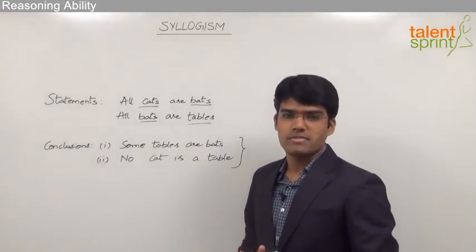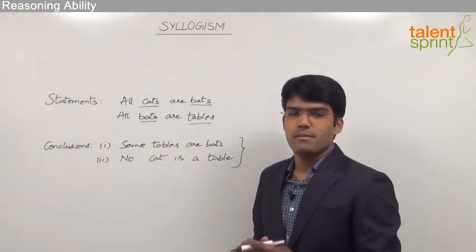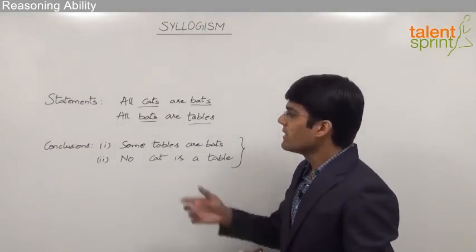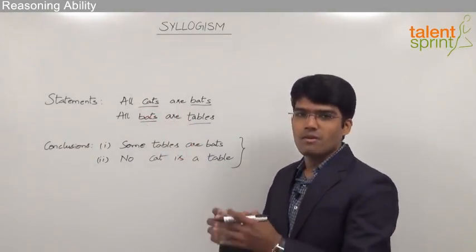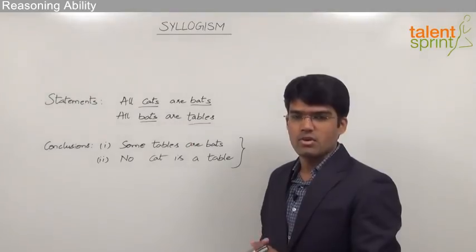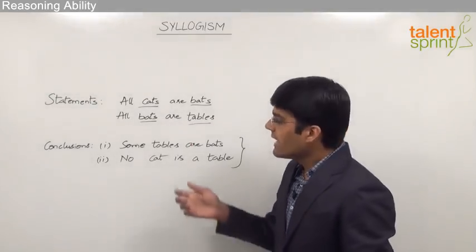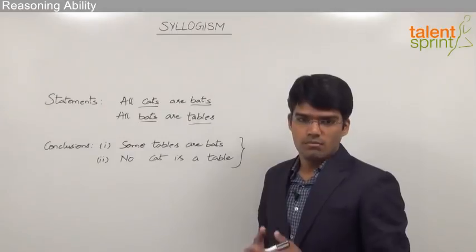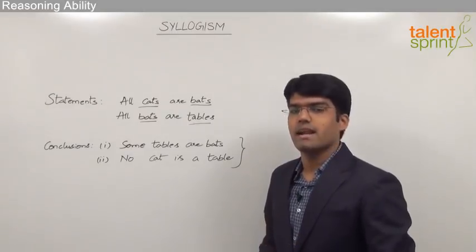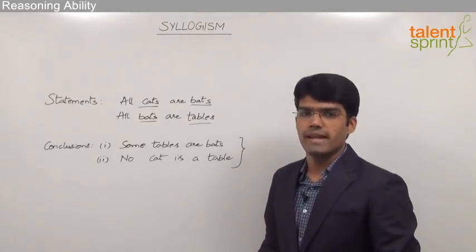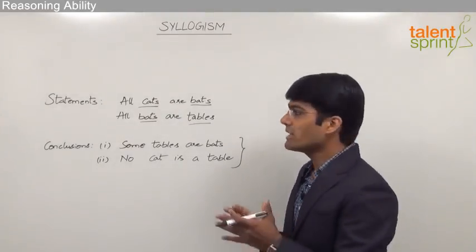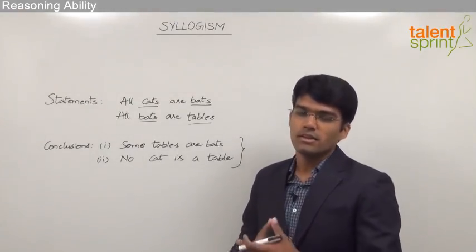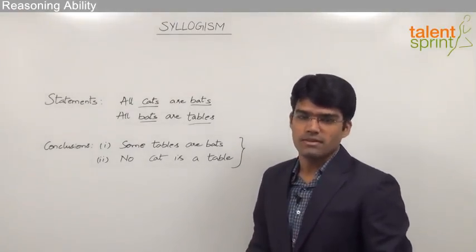To solve questions from syllogisms, the best method is to use Venn diagrams, where we draw the statements in terms of Venn diagrams — also known as Euler's circles — and then check which of the conclusions are true. But before we understand how to draw Venn diagrams, let us first understand what are the various types of statements and quantifiers used in syllogisms.